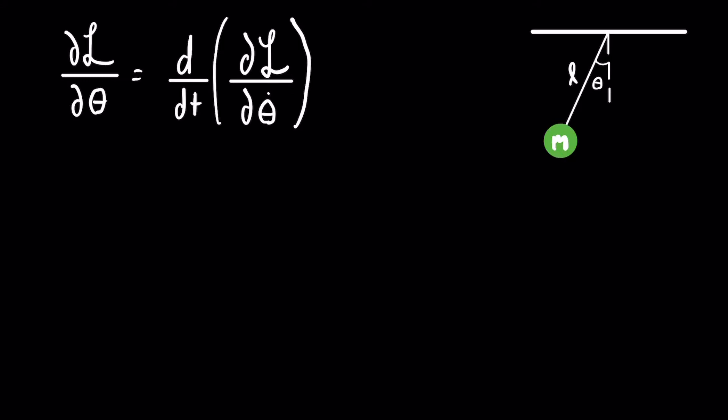In order to make the Lagrangian we need the kinetic and potential energies. Let's start with the kinetic energy. This mass is rotating about a fixed point, so we could say it has rotational kinetic energy, which takes the formula of one half i omega squared, where i is the moment of inertia about the point of rotation and omega is the angular velocity.